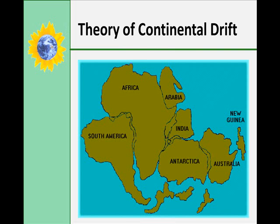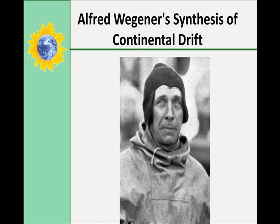Since the 16th century, as better and better maps were being developed, people began to notice that the eastern margins of Africa fit the western margins of South America. The question became popular: could they have been joined? In 1912, Alfred Wegener proposed that several continents, now separated by major ocean basins, had been much closer together about 300 million years ago, and had been part of a single supercontinent called Pangea.